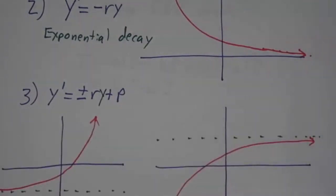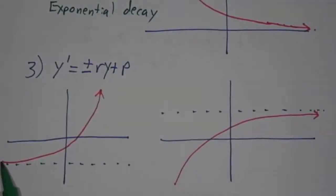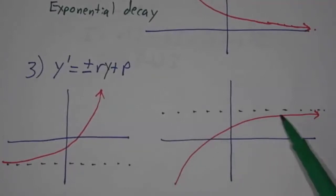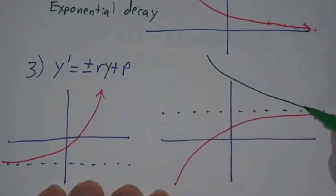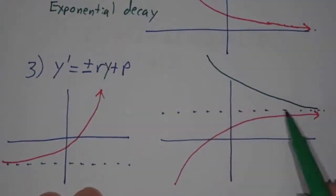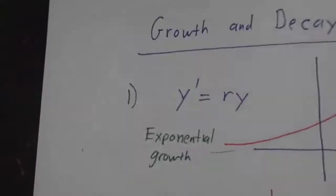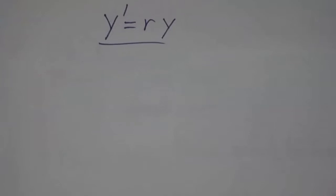That will either give us growth away from a certain equilibrium or decay towards an equilibrium point. It might approach from below or above, but it doesn't approach zero. It approaches some non-zero equilibrium. In this video, we're going to go over some models of those three types. We're not going to solve them, but we're going to see how these situations show up in the real world.